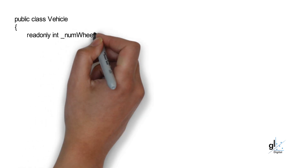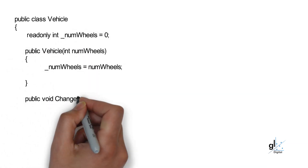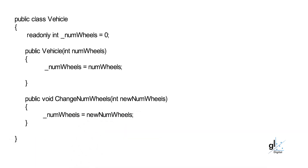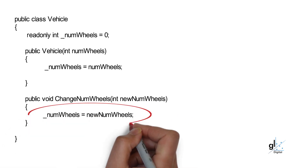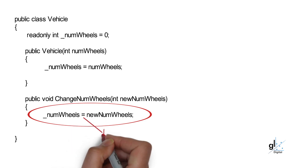The constructor of a class is called when an object is created from the class, and is used to initialize member variables for the object. So the value for read-only variables will be set at this point. If a private member variable is a read-only variable and is set within a constructor at runtime, you are not able to change the value for this variable once its value has been set in the constructor.